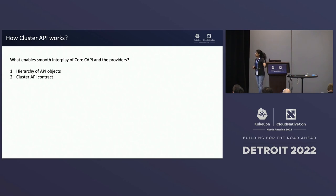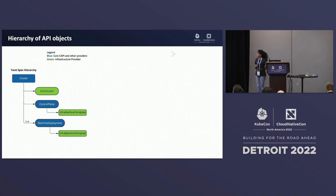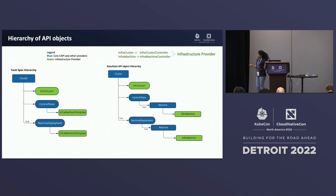Let's go a bit deeper to see how Cluster API works. What enables the smooth interplay of core CAPI and all the other providers? Number one: hierarchy of API objects, and number two: the Cluster API contract. The diagram here is a pictorial representation of the Cluster API manifest file. Everything in blue are custom resources associated with core CAPI and other providers, and those in green are associated with the infrastructure provider. When you apply that YAML file, this is how the resultant API object hierarchy looks.